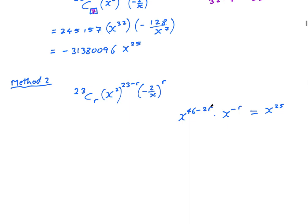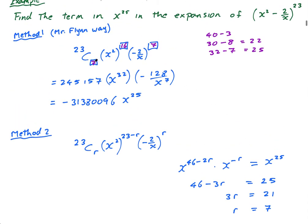So this is 46. I'm going to add the powers because this is the first law of exponents. 46 - 3r equals 25. Then 3r equals 46 minus 25, which is 21. And then r equals 7. Once you have r equals 7, then you just go into this step here. 23 minus 7 is 16. And then you're here.